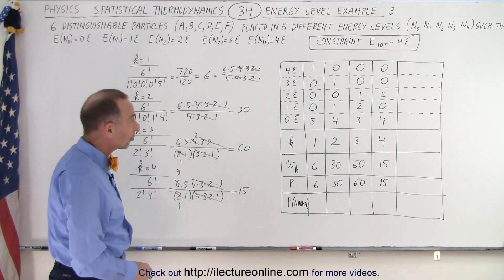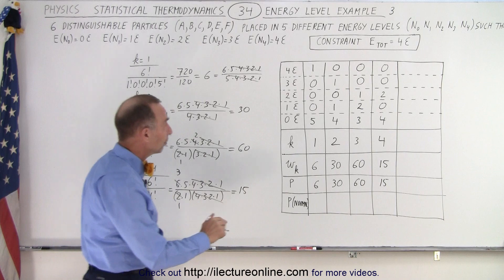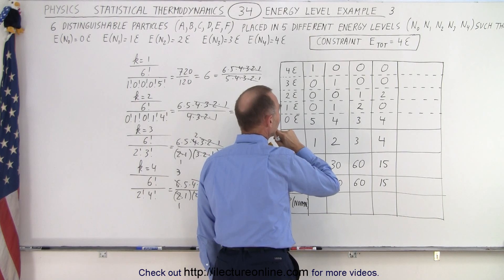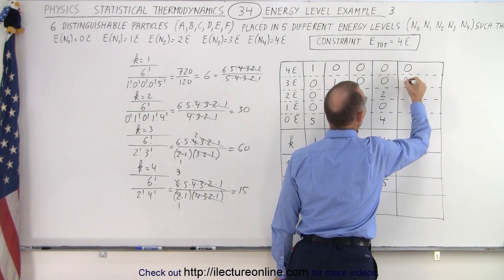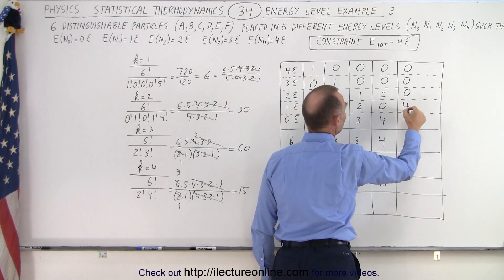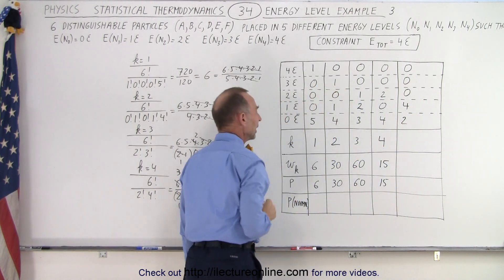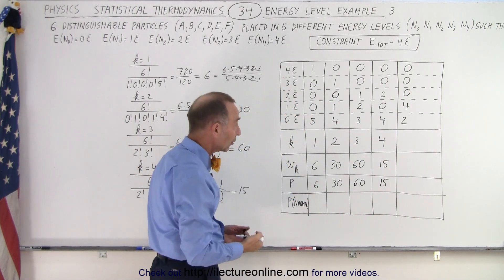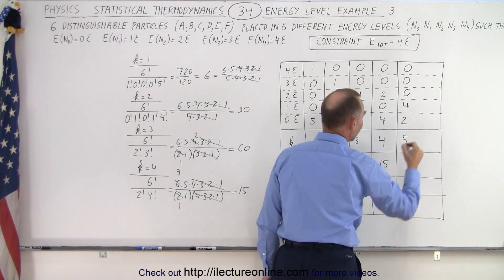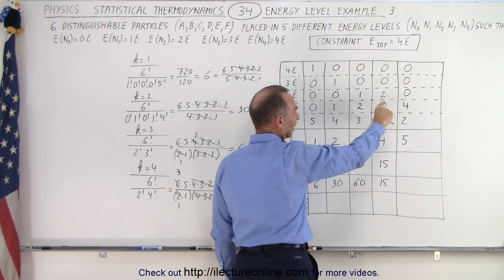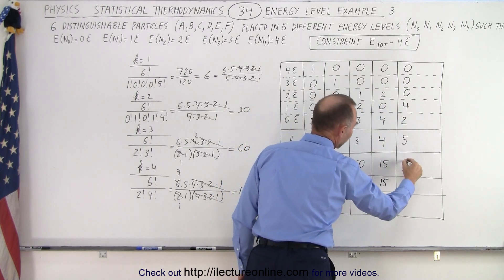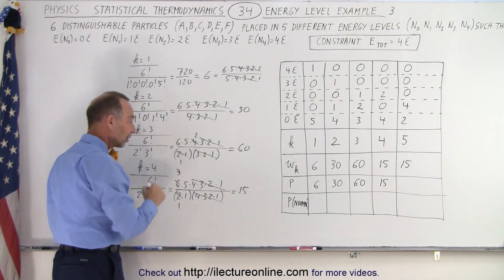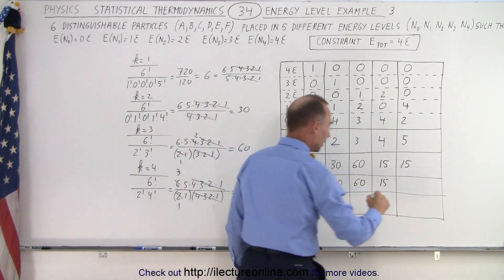We've exhausted configurations with particles in the higher energy levels, so now we drop down to the one-quantum-energy level. Putting zeros everywhere else, we need four particles here — four times one gives us four quantum energies — with the remaining two going in the ground level. That appears to be the last configuration, making five macrostates total. Notice that with two and four swapped compared to macrostate four, we again get 15 microstates for k equals five, with a probability of 15.